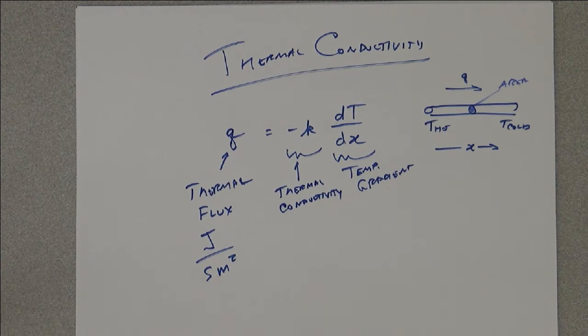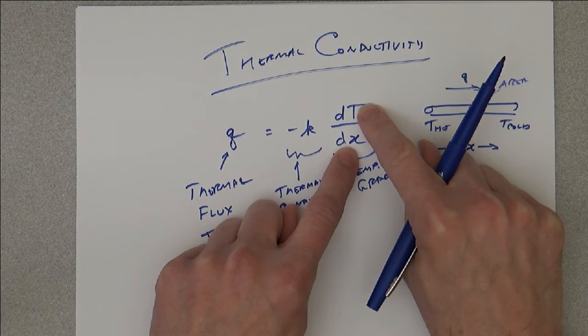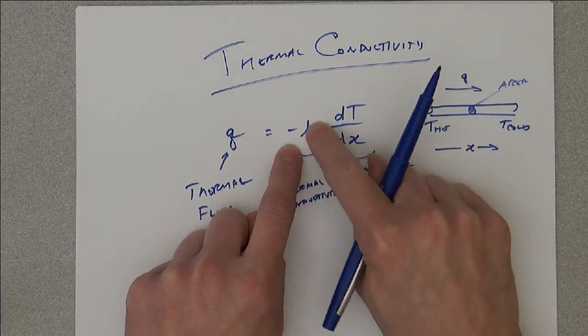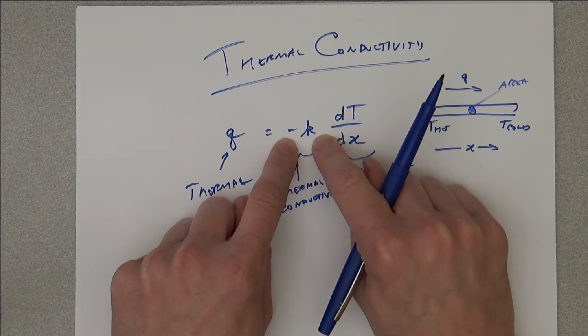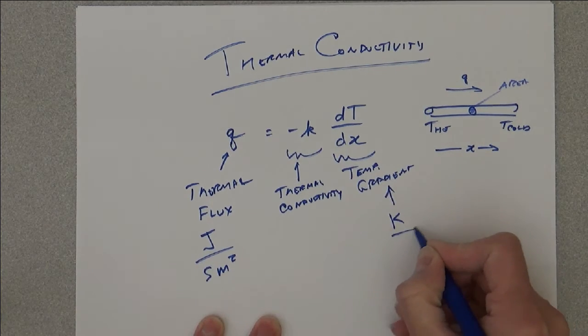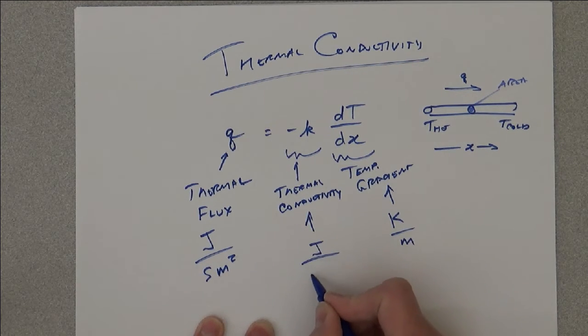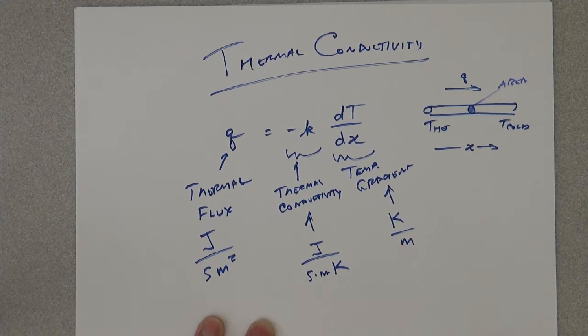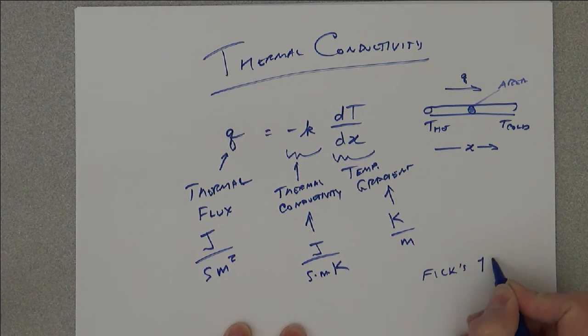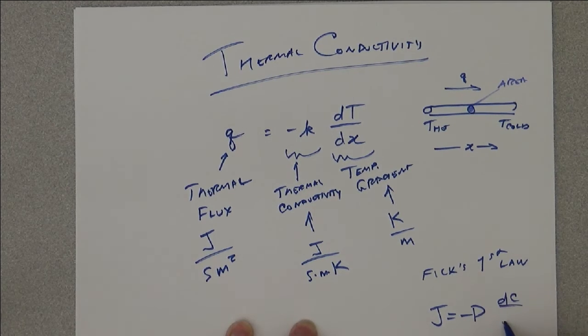This should look very similar to our concept of flux, the concentration gradient for matter. The coefficient in that case was the diffusion coefficient. This makes it very similar in condition and behavior to Fick's first law, which you may remember being J equals negative D dC/dx.